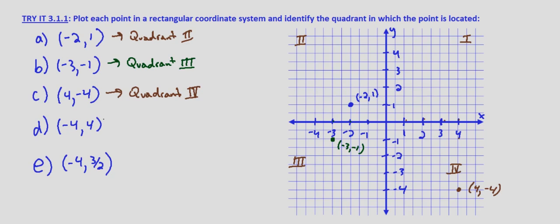With part d, we have negative 4, 4. The x is negative, the y is positive, so we're going to be going to the left and up — that's the same situation as part a, so we're going to be in quadrant 2. We go 4 units to the left and 4 units up. That's the point negative 4, 4.